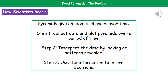Next, we interpret the data by looking at any patterns that we reveal. Is there a particular organism that seems to be increasing, or is there one that's decreasing? And then finally, we use that information to inform decisions. So if we've got an organism that's decreasing, would something like a protected habitat area help them? That obviously comes from the information we've ascertained from these observations and drawing our pyramids.